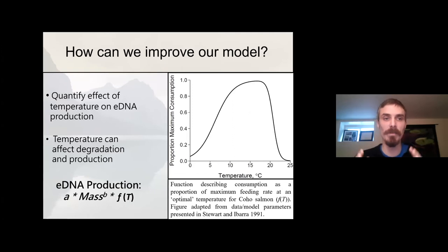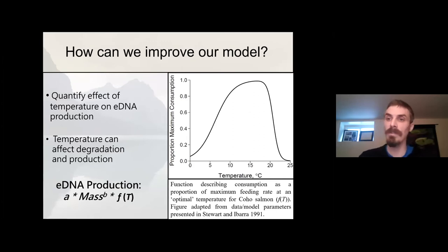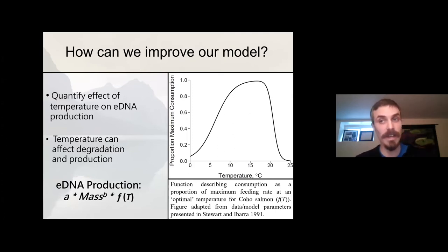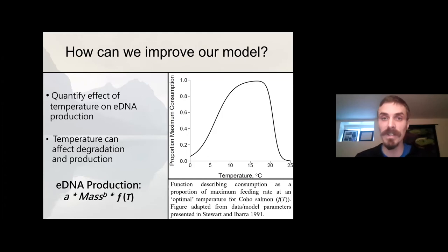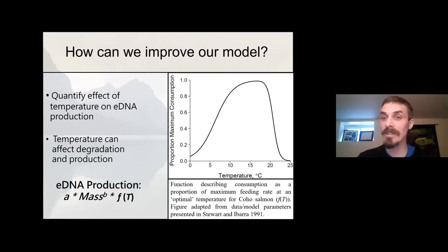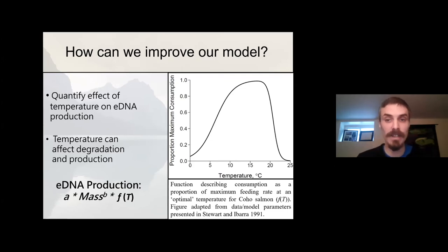Temperature is a really important environmental parameter for eDNA because it can affect both degradation and production. Fish are poikilothermic organisms, which means that their key metabolic rates — and eDNA production is fundamentally a physiological metabolic process — are strongly influenced by the external temperature of their environment. To demonstrate this, I want to show this graph drawn from a 1991 study that describes a bioenergetics framework modeling the proportion of maximum consumption, basically the feeding rate, of coho salmon. You can see that it's highly dependent on temperature.